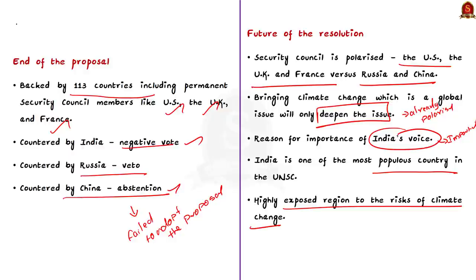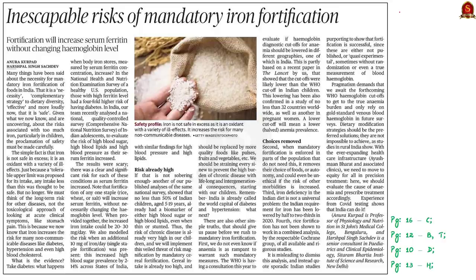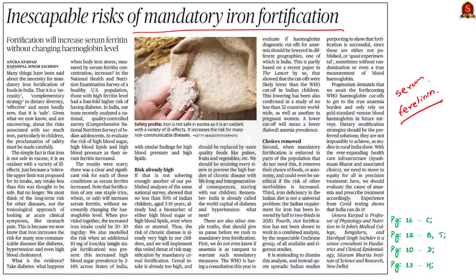That is all about this article. We discussed the background of the UNSC draft proposal on climate, why the resolution was introduced by Niger and Ireland, the reasons India rejected the draft proposal, and the future of this resolution. Let us now take up the next news article. This article talks about the ill effects of mandatory iron fortification, because fortification will increase serum ferritin without changing hemoglobin level. We will discuss what iron fortification is, the ill effects of excess iron, the issues with iron fortification, and the alternative solutions.